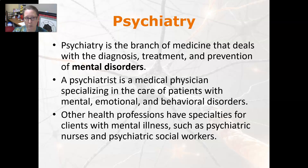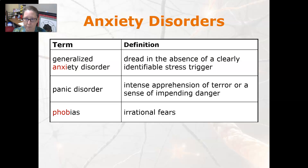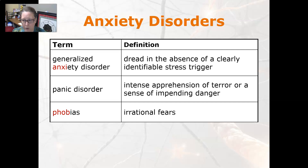Let's start looking at those 19 categories. First, anxiety disorders: generalized anxiety disorder is dread in the absence of a clearly identifiable stress trigger. Panic disorder is an intense apprehension of terror or a sense of impending danger. Phobias are irrational fears.